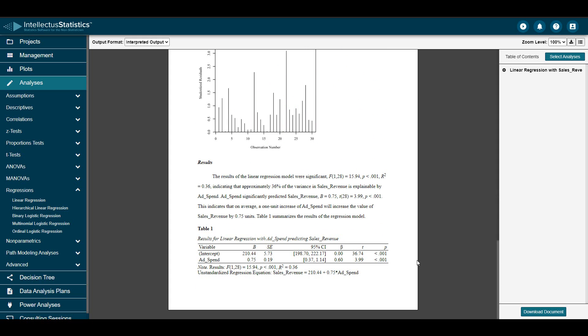The results of the regression were significant, indicating that about 36% of the variance in sales revenue is attributed to advertising spend. The coefficient for advertising spend is 0.75. This means that for every $1 increase in advertising spend, sales revenue increases by 75 cents on average.